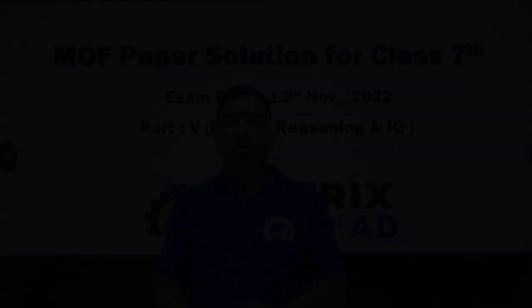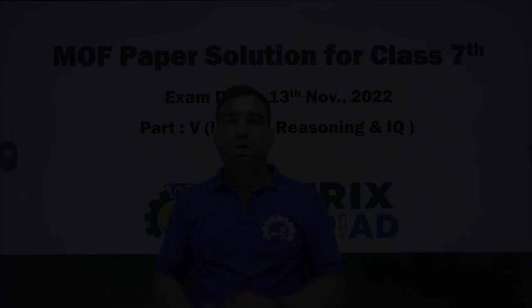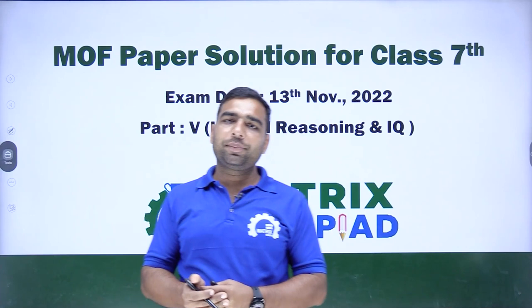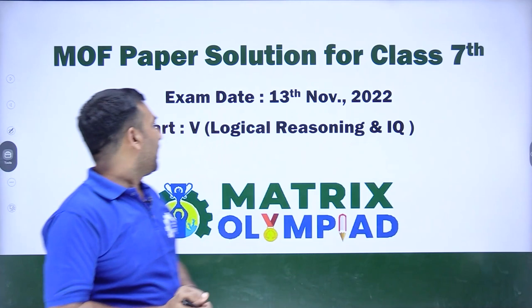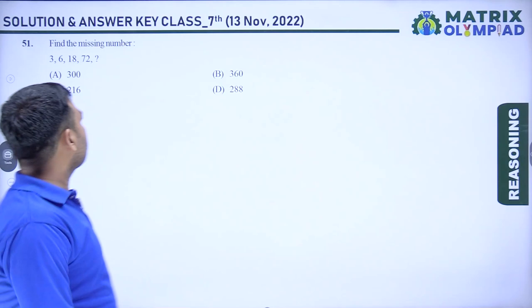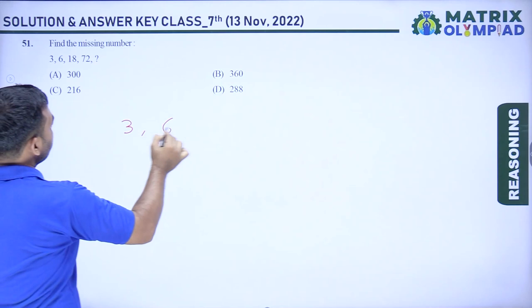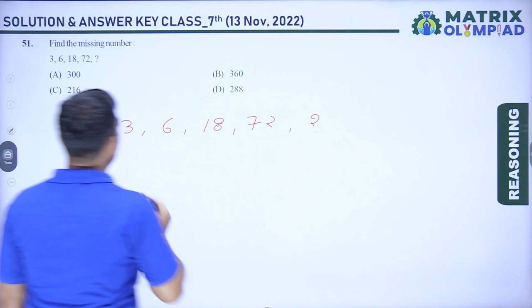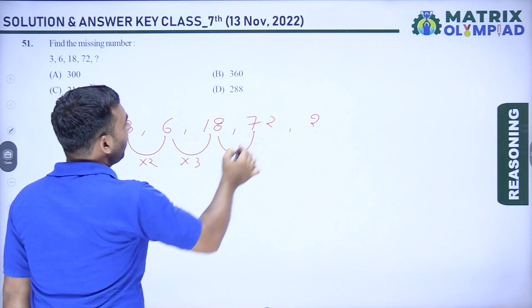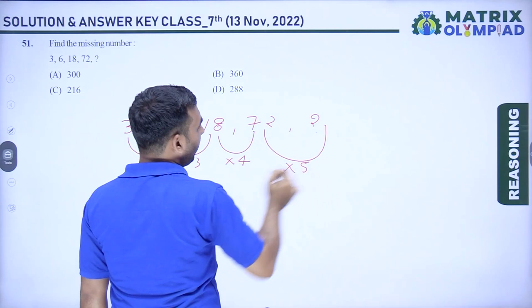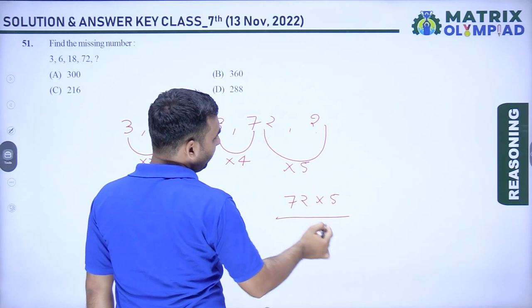Hello, my dear students. My name is Akash Chaudhary, your reasoning mentor. Today we are discussing Matrix Olympiad paper Class 7 Part 5 — Logical Reasoning. Question 1: find the missing number in the series 6, 6, 3, 6, 18, 72. Pattern: ×2, ×3, ×4, then ×5 = 360. Answer is 360. Option B is correct.